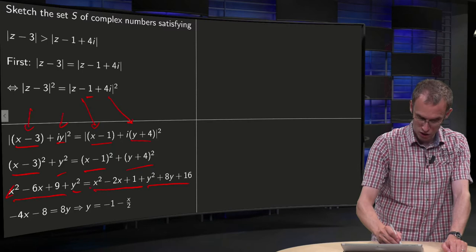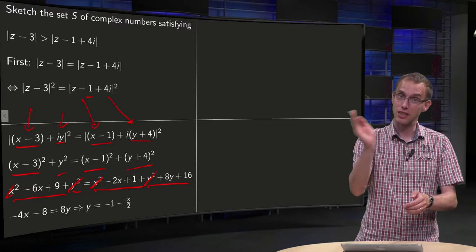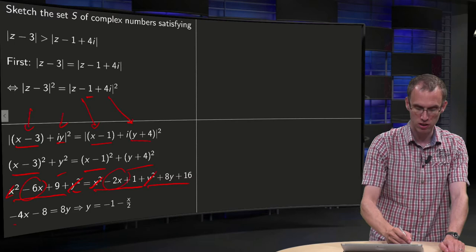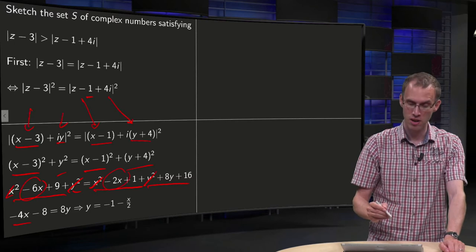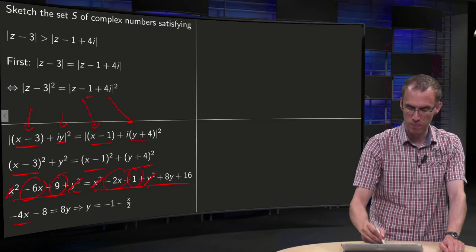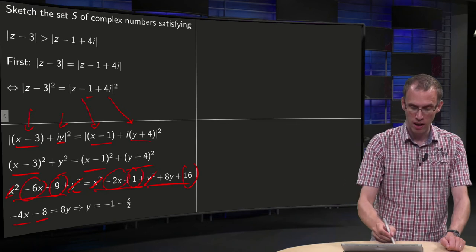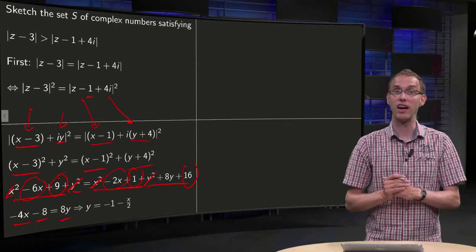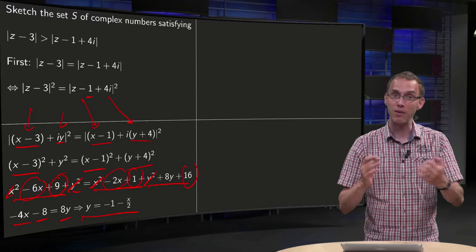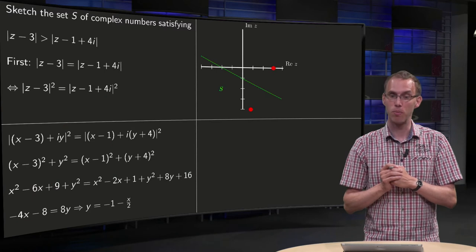Something is going to cancel out: x² cancels out, y² cancels out. Put all x's to the left: -6x and -2x yield -4x. Put all constants to the left: 9, -1, and -16 yield -8. So -4x - 8 = 8y, and solving for y: y equals -1 - x/2. We recognize that this boundary is exactly a line in the complex plane.